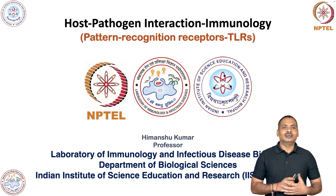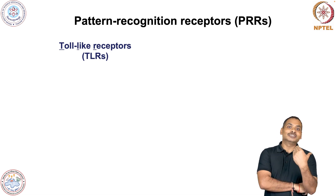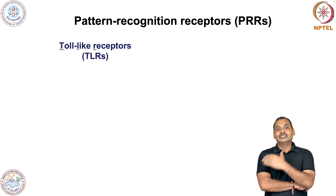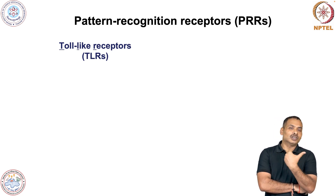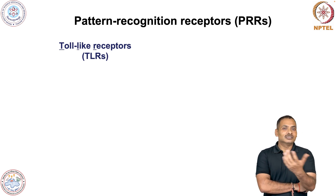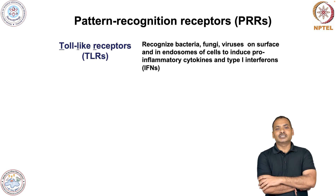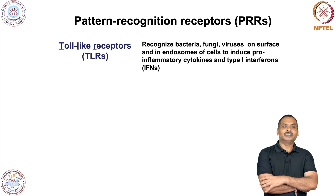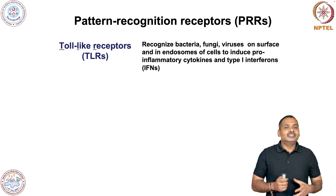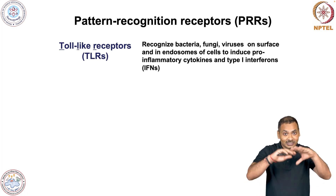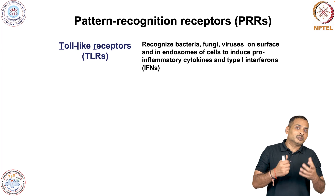In this session I will talk about TLR — the Toll-like receptor. The word 'Toll' comes from the Toll protein discovered in Drosophila; a protein similar to Drosophila Toll was later discovered in humans and mammals, and we call these Toll-like receptors. These Toll-like receptors recognize all kinds of microbial pathogens including bacteria, fungi, and viruses. Most interestingly, they recognize these entities both on the cell surface as well as inside vesicles within the cell.